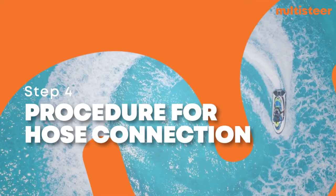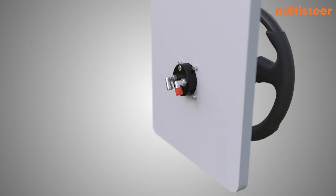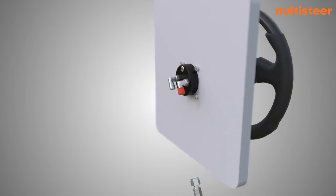Step 4. Hose Connection. Remove the thread protector cap from the starboard side of the elbow of helm and insert the hose fitting into it. Tighten the hex nut on the hose fitting.